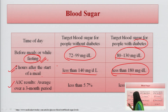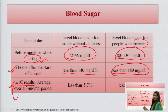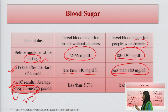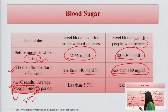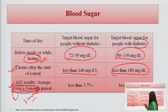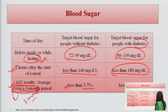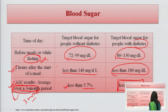Another test is the A1C test, which is performed to determine if a patient is diabetic. This test gives a three-month result because it measures glycated RBCs — the age of an RBC is about 120 days. We are trying to find how many RBCs are conjugated with glucose. For normal patients, the level is below 5.7 percent; for diabetic patients it is less than 7 percent. If values are between 5.7 to 7 percent, the patient may be suffering from diabetes.